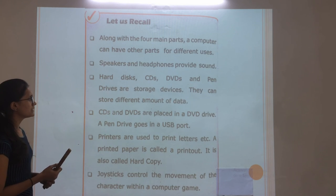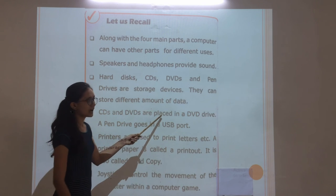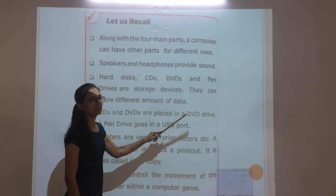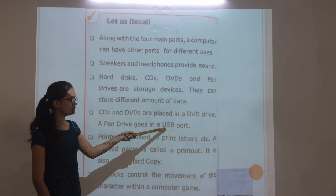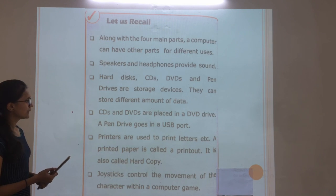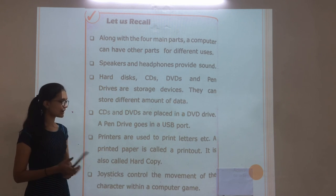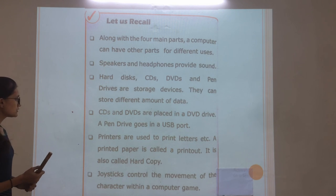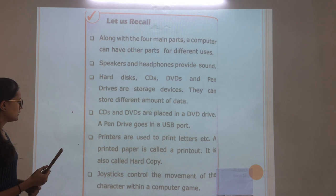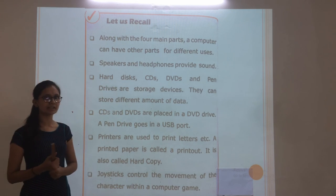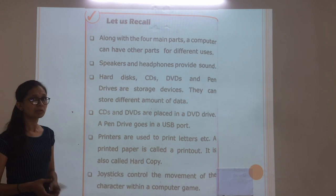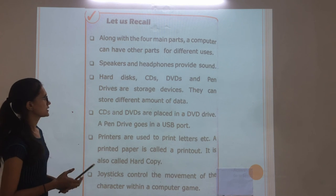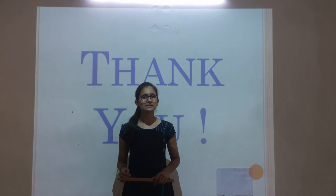CD and DVD are placed in a DVD drive. Pen drive goes in a USB port. Printers are used to print documents. The printed paper is called a printout, also known as a hard copy. Joysticks control the movement of the character within a computer game. Our chapter is now complete. Exercise and review are next. Bye-bye!